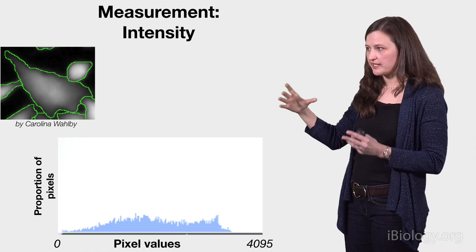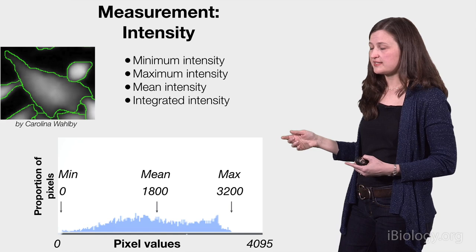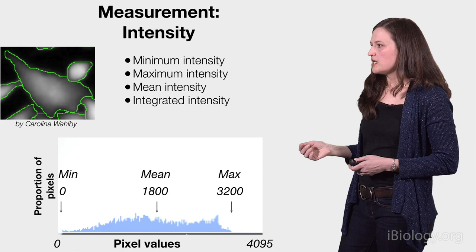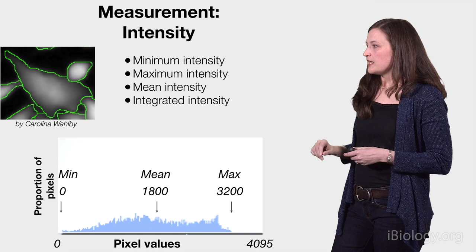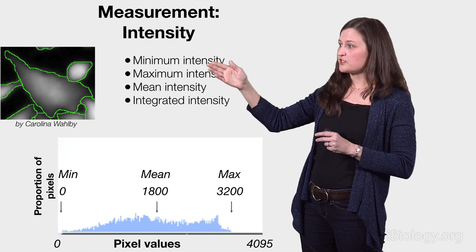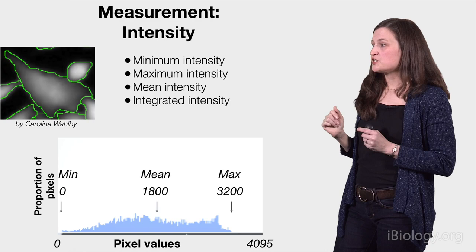You can measure the maximum or minimum intensity values within this particular cell, but usually researchers want to measure things like mean or integrated intensity. The mean intensity is just the average of all these pixel values. The integrated intensity is the sum of pixel values, and therefore the range of numbers you get can be in the millions. If you cut this particular cell roughly in half, the mean intensity of each half will be roughly the same, but the integrated intensity will be cut in half.